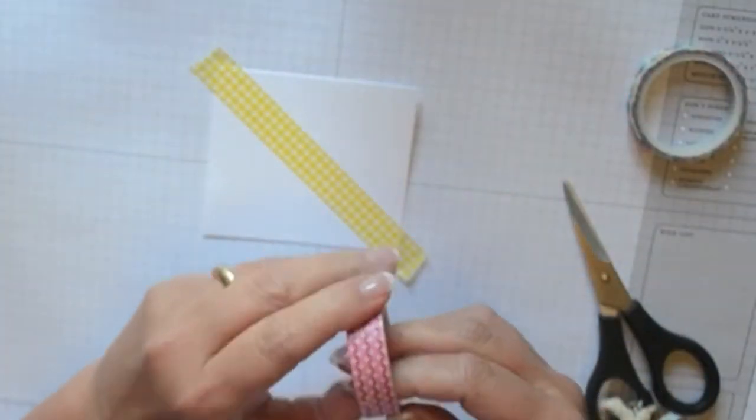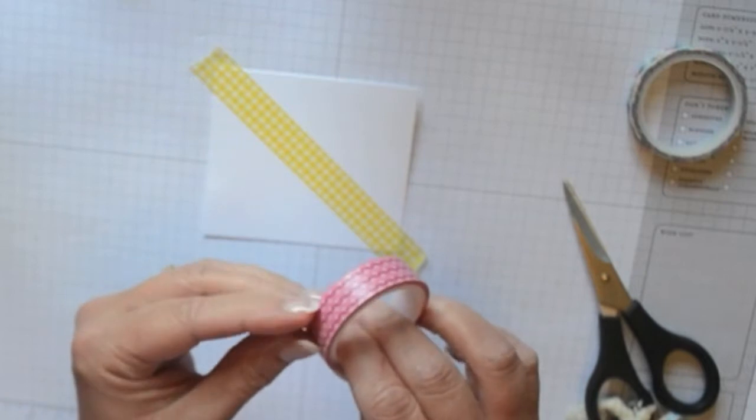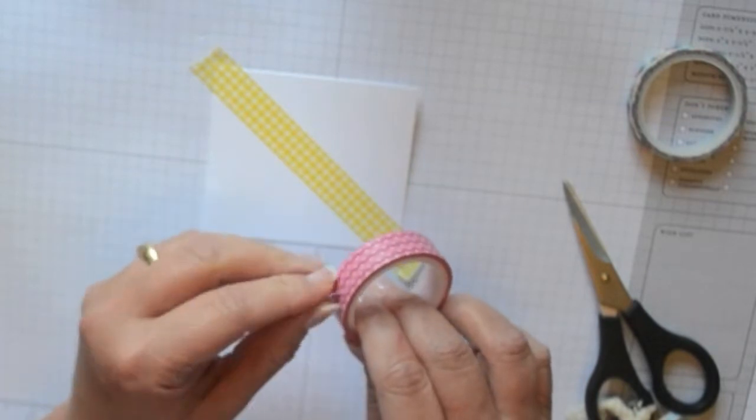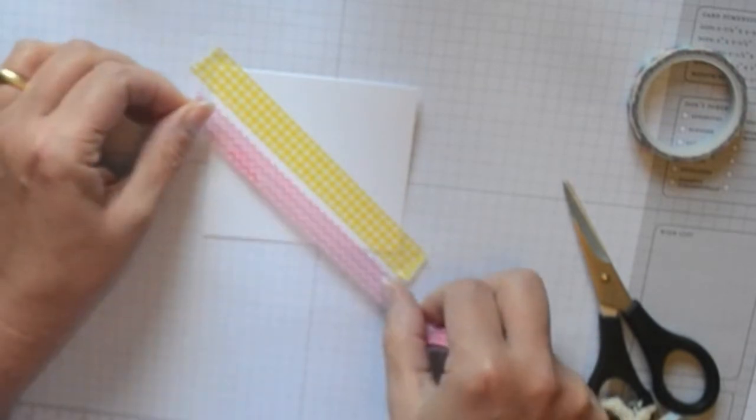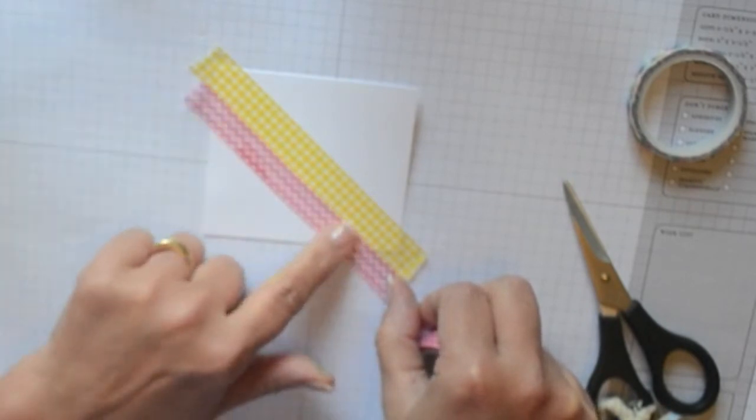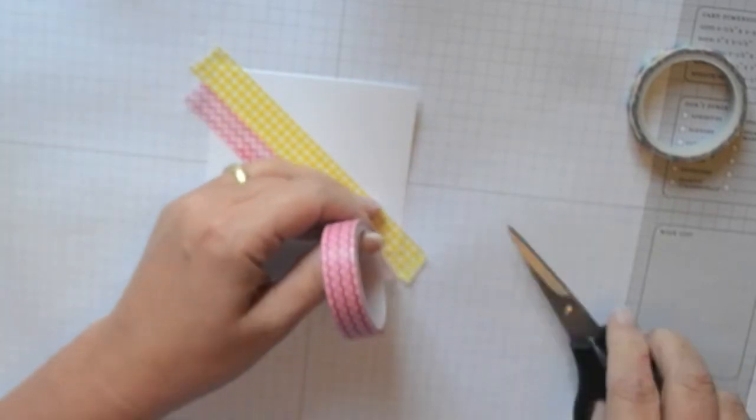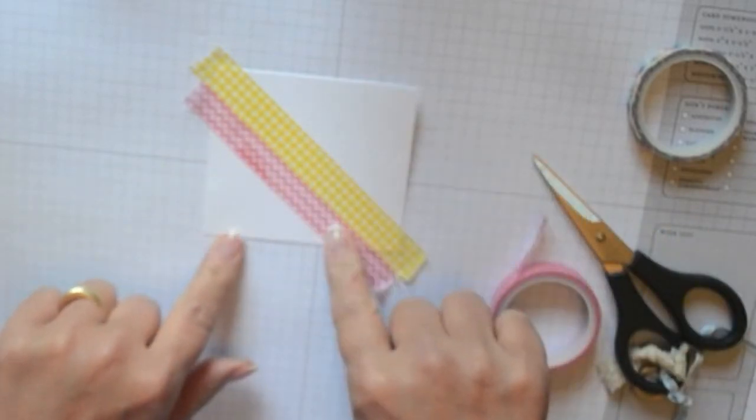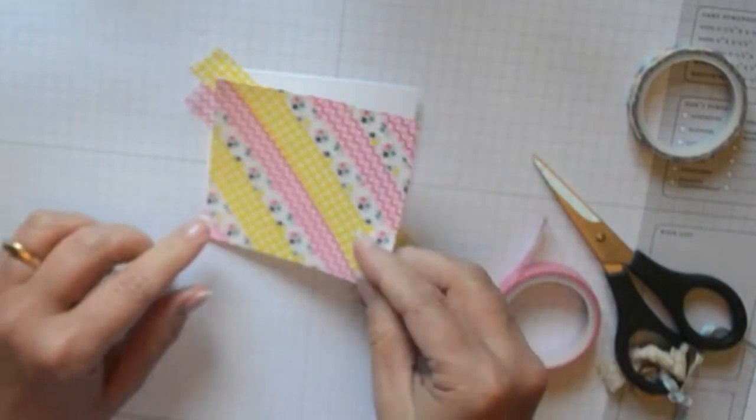And then you're going to come in with your second color. Hardest part is finding the end here. Here we go. I'm just going to go in again. You just go right beside that other one and you're going to keep going adding tape as you go until you have something that looks like this.